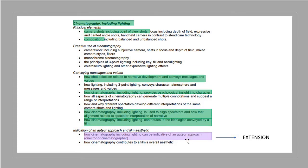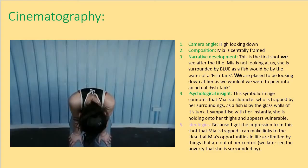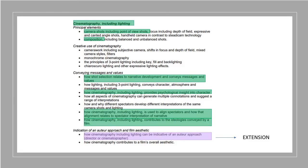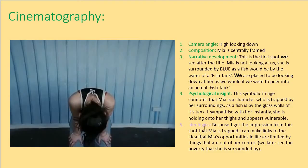My example: whilst watching the clip, I screenshotted a shot I thought was really significant. I've given it the title of the slide — cinematography — and I've taken four key points from the previous slide. Number one: camera angles. Number two: composition. Number three: narrative development. Number four: psychological insight. And I did manage to look at the ideologies as well.